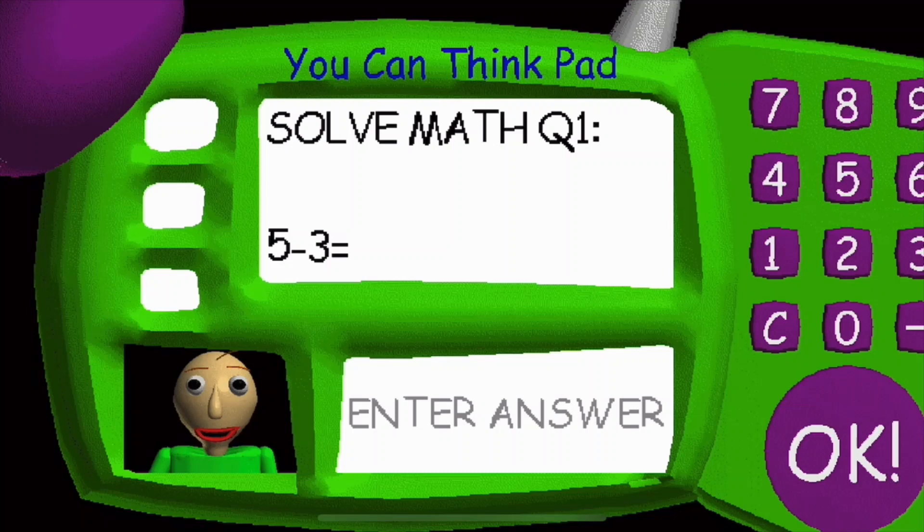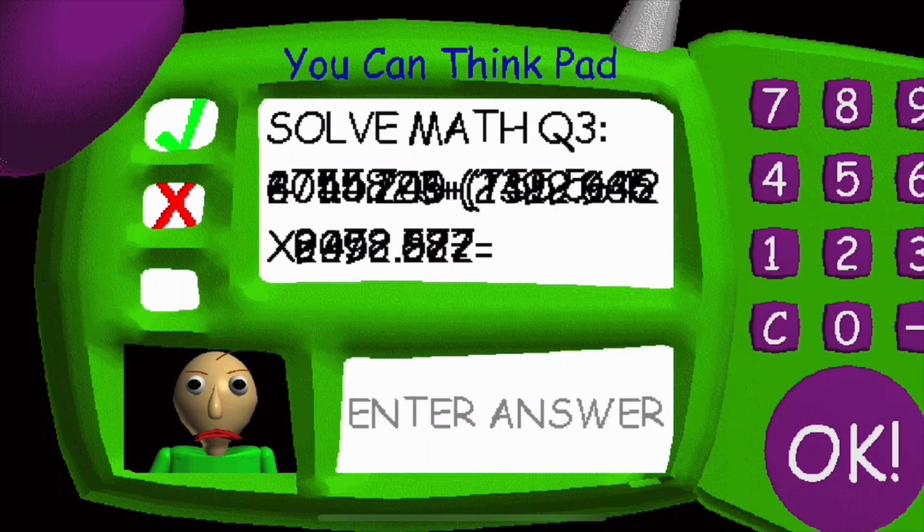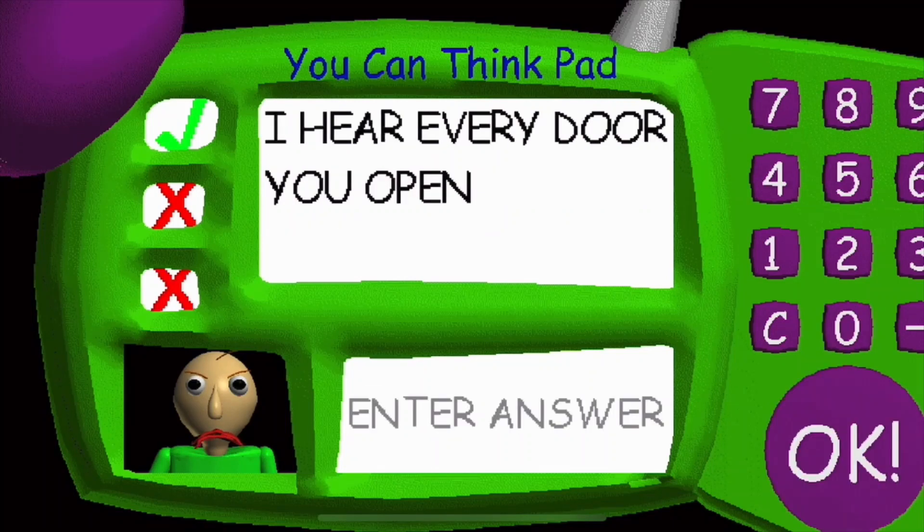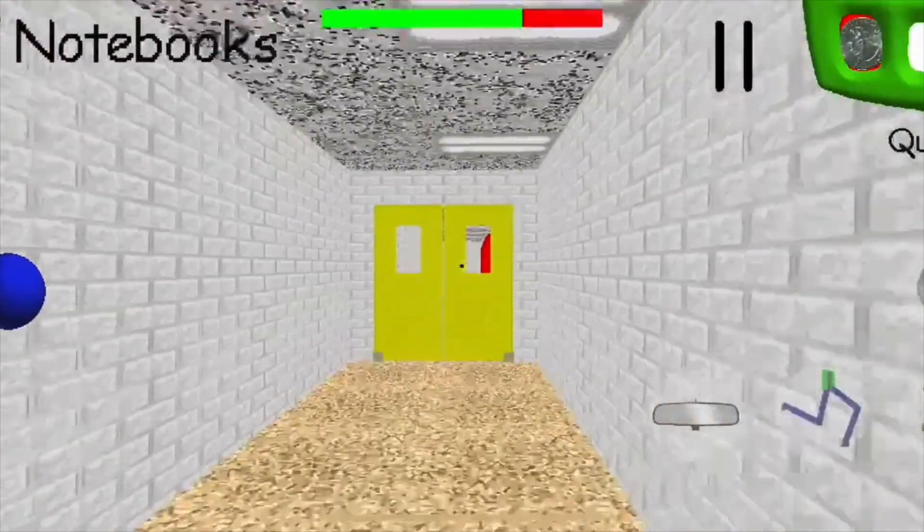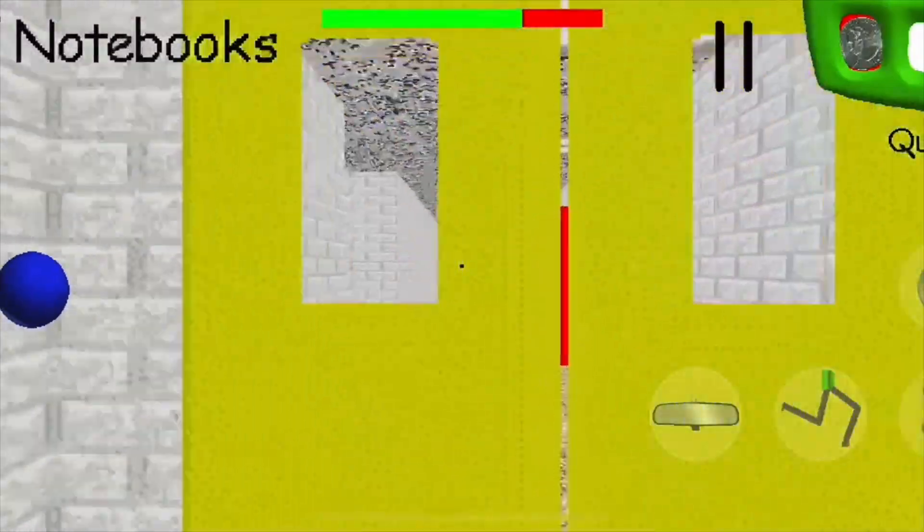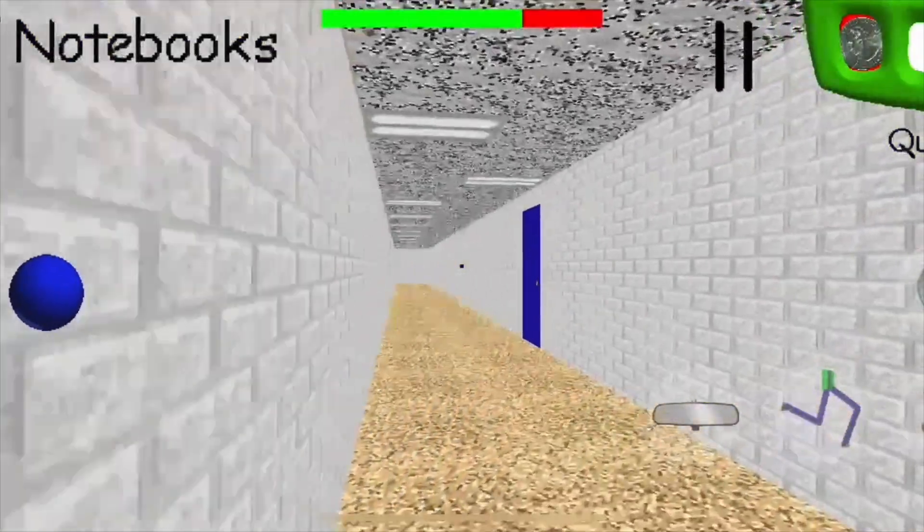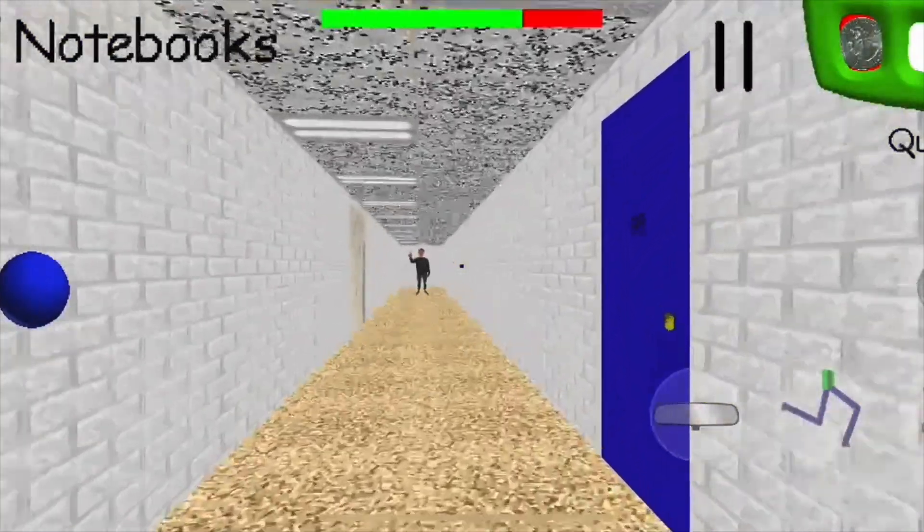You stay- Are you serious? Problem 1. 5 minus 3. You're doing fantastic. Okay, our mission is to get seven notebooks. If we do get seven notebooks, we have to find an exit to go.